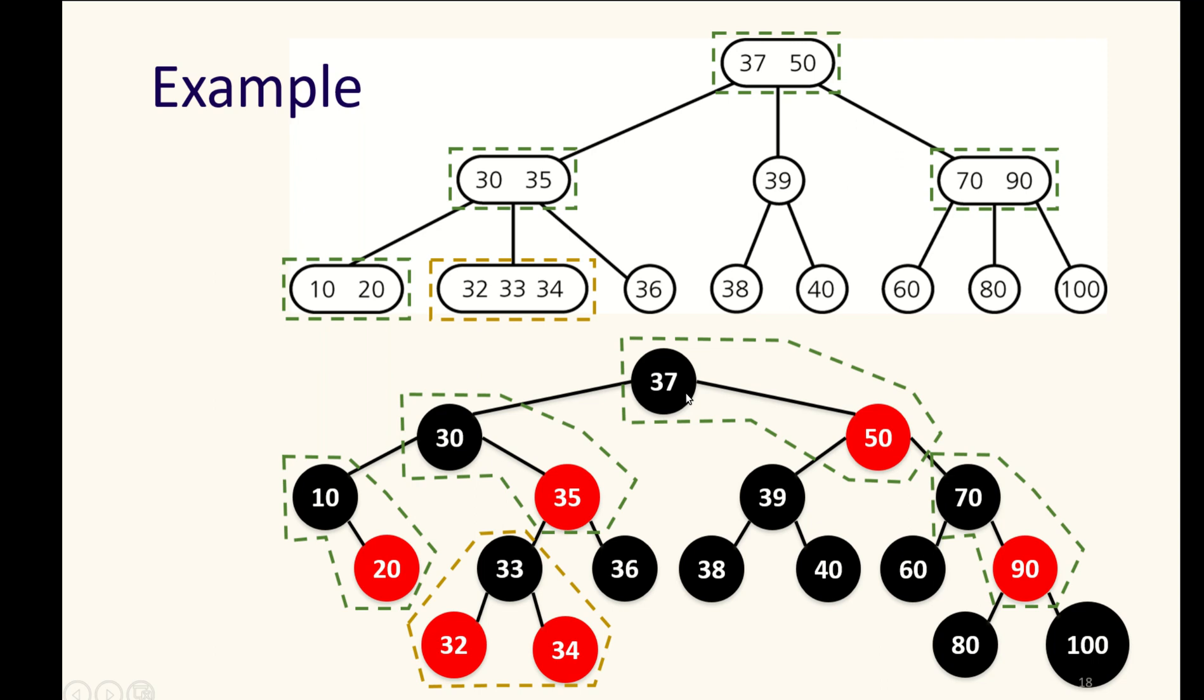And so to get to any leaf from the root takes a step through the same number of black nodes. It doesn't put all of our leaves at the exact same height, but it does put them within a limited height from each other, and therefore gives us a decently balanced tree.